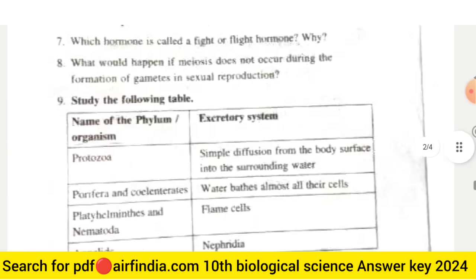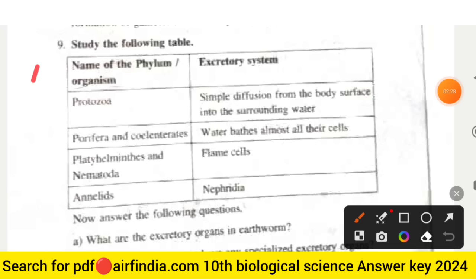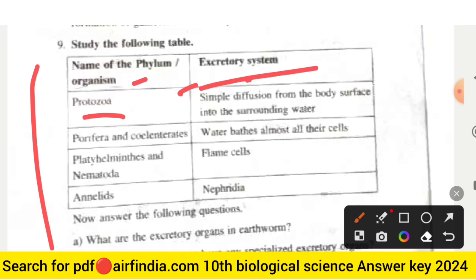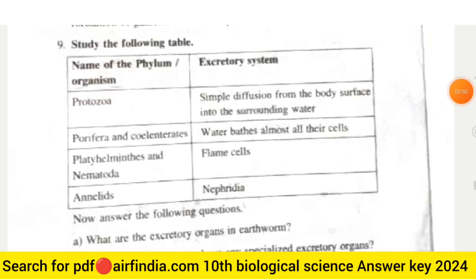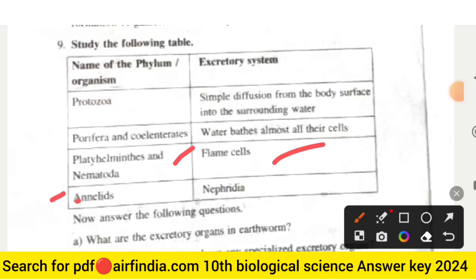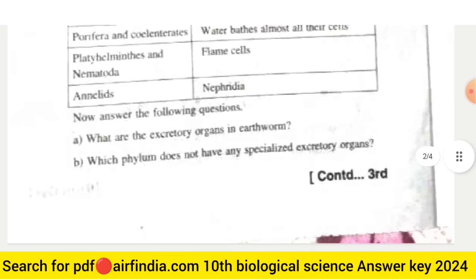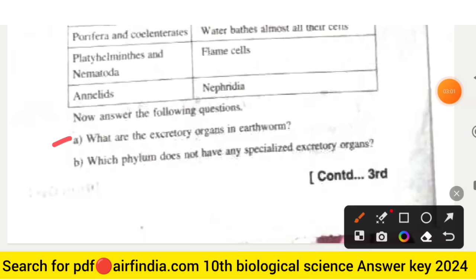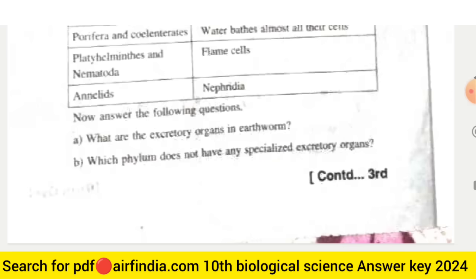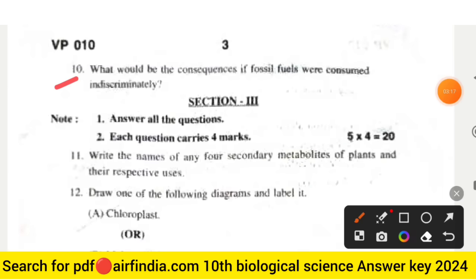Question number nine: study the following table showing organism names and their excretory systems. Protozoa use simple diffusion from the body surface into the surrounding water; Porifera and Coelenterates use water baths through almost all their cells; Platyhelminthes and Nematoda use flame cells; and Annelida use nephridia. Answer: (a) what are the excretory organs in earthworm? (b) which phylum does not have any specialized excretory organs?